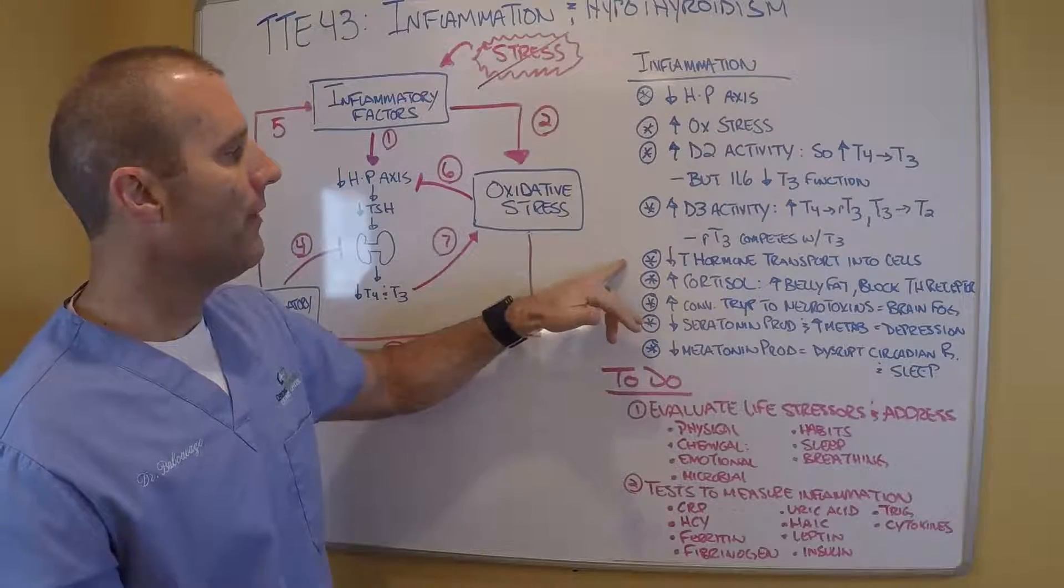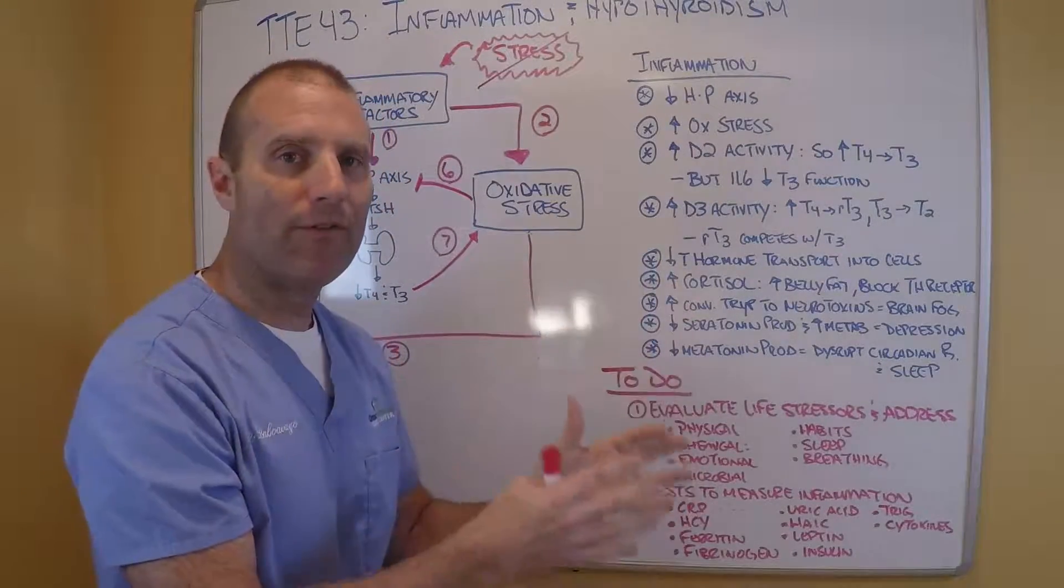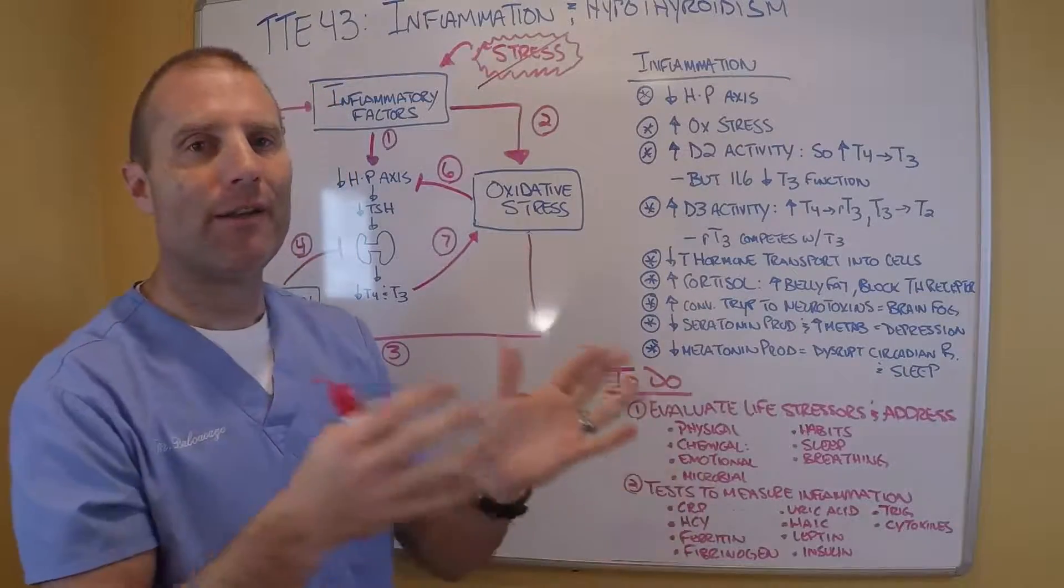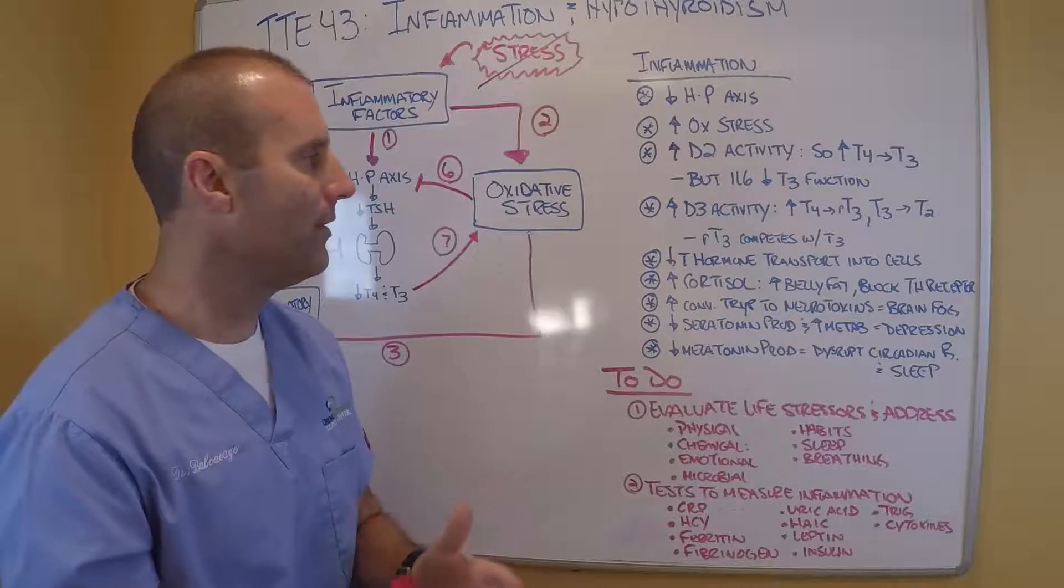So we've got a couple things that decrease. IL-6 will decrease T3 function. We'll get D3 that increases reverse T3, and then the reverse T3 competes with the T3 that is available for its ability to work and regulate metabolism. I've talked about this before, that inflammation decreases thyroid hormone transport into the tissue so the blood values can look normal. But because it can't get out of the blood and into the cells, you'll still have hypothyroid symptoms. Doctors don't really take that into account.